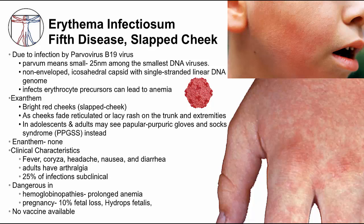Fifth disease is caused by parvovirus B19. Parvovirus is a small, non-enveloped virus with a DNA genome. It has tropism for erythrocyte precursors, which can sometimes lead to significant anemia. The exanthem is notable for very bright red cheeks — often called 'slap cheek.' As the rash on the cheek fades, a lacy or reticulated rash appears on the trunk and extremities. In adolescents and adults, there is another rash pattern with papular and purpuric lesions along the extremities in the distribution of gloves and socks. In contrast to other diseases, fifth disease has no associated enanthem, although arthralgias are often seen in adults. Asymptomatic infections can occur, but these individuals are still infectious.